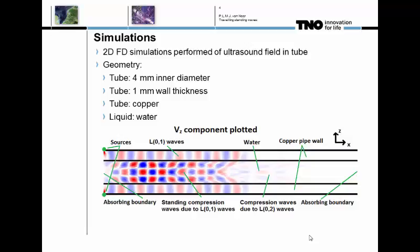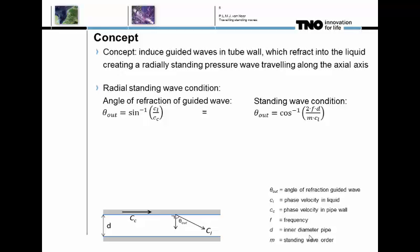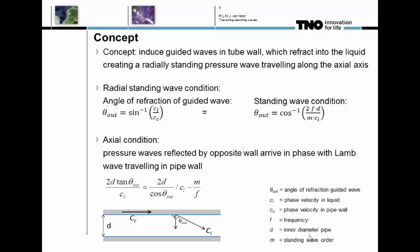The concept is to induce guided waves in the tube wall which refract into the liquid, creating a radially standing pressure wave field that travels along the axial axis of the pipe. To do this efficiently, you need to fulfill two conditions. The first is the radial standing wave condition, where the angle of refraction of the guided waves must be such that the standing wave criterion in the liquid is fulfilled. The second is the axial condition, where the pressure wave field reflected off the other side must arrive back in phase with the guided wave traveling in the wall.